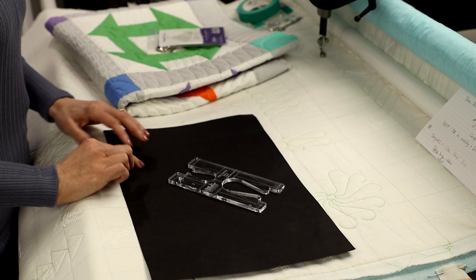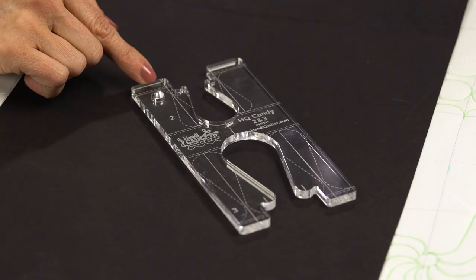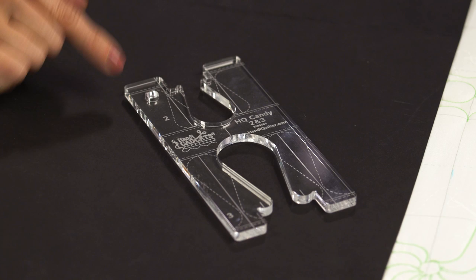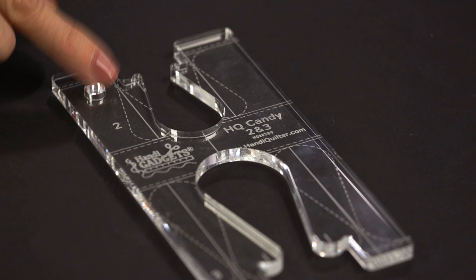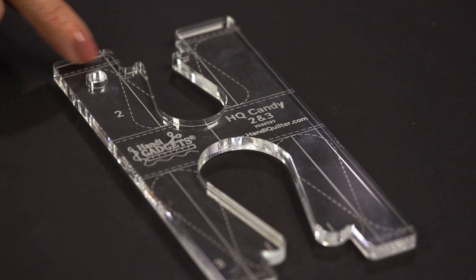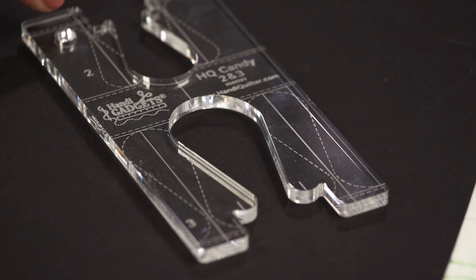If you take a look at this ruler, you'll notice we have lots of different grids and etching on it. We have the previous stitching line and the next stitching line that you can use to help line up. We also have the seam line as well as where the candy is going to be because it's just a little bit inside your seam. Those are some great tools that you're going to be using as we play with this ruler.